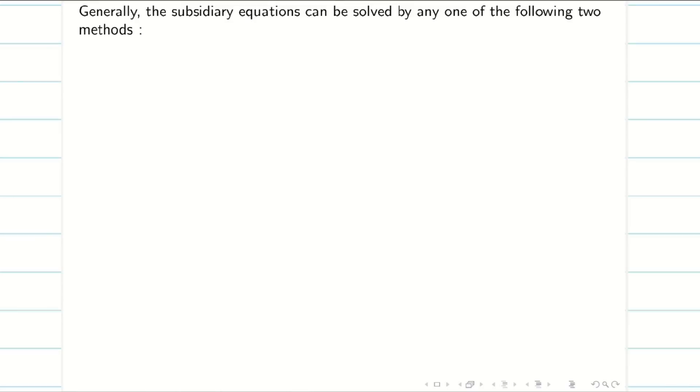The subsidiary equation can be solved in two methods: method of grouping and method of multipliers. In the previous video, we saw how to solve problems using method of grouping. When method of grouping fails, we go for the method of multipliers.